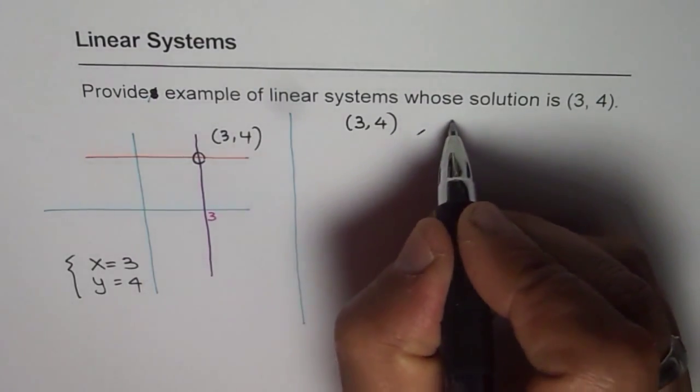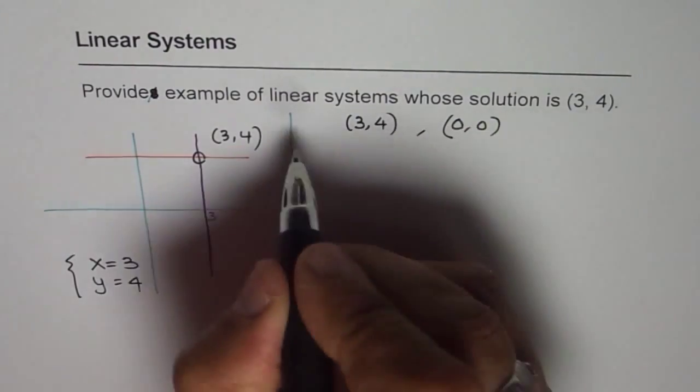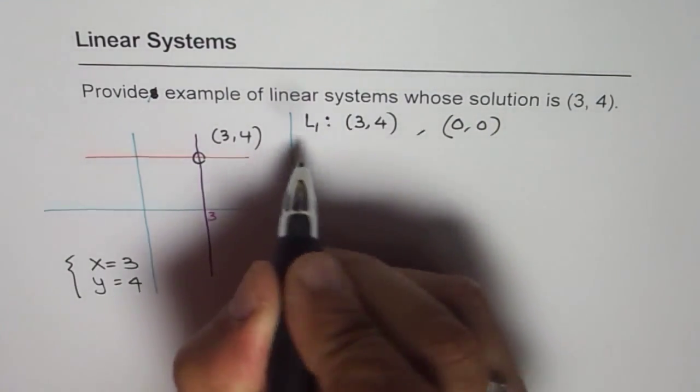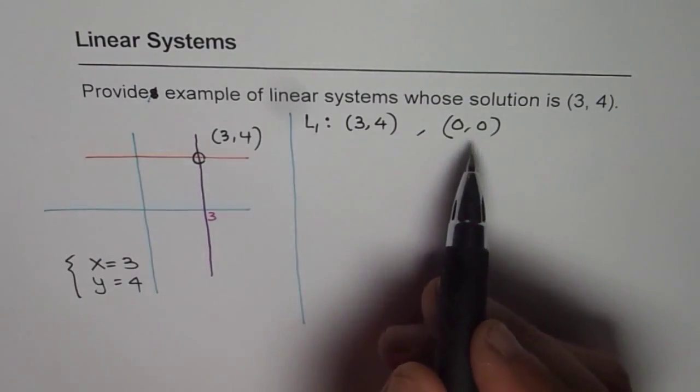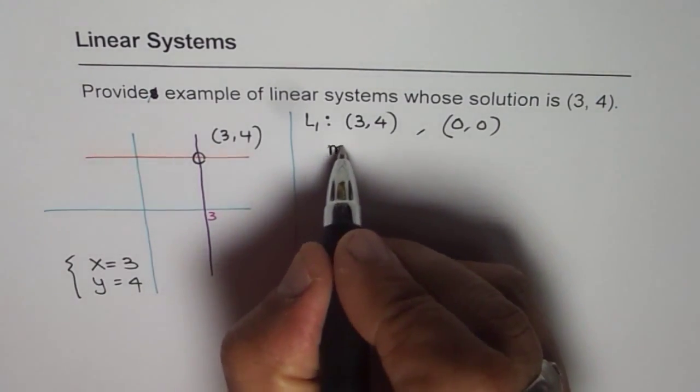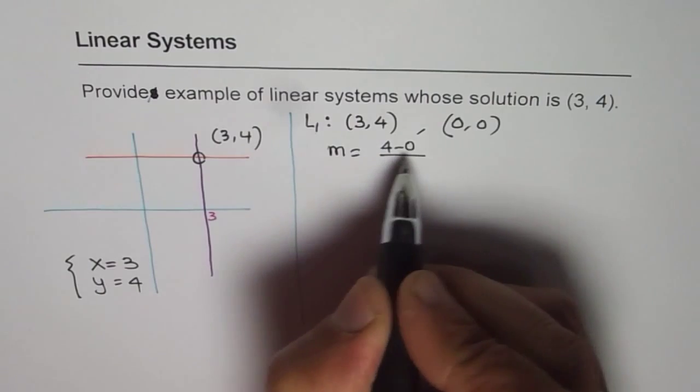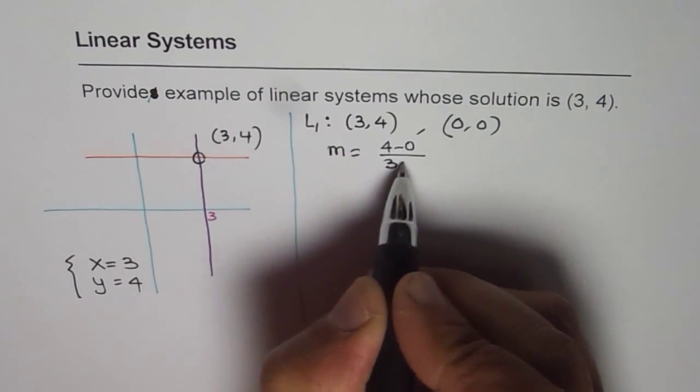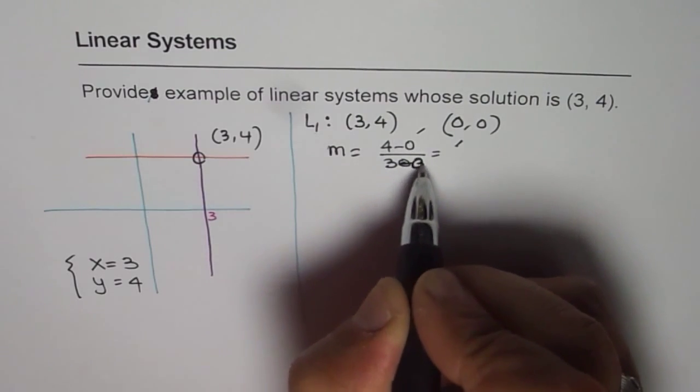So let's take another point on a line and find its equation. So let's say the other point is (0, 0). So let this be line 1. So line 1 has these two points, and we can find the equation of this line. Let's find it out. So if these are the two points, then the slope is rise over run, which is 4 minus 0, divided by 3 minus 0,